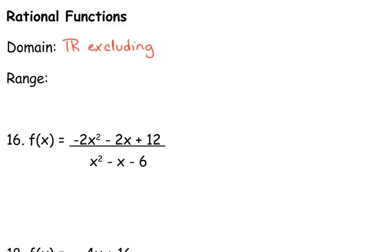Do y'all remember what the values were called that caused issues with our rational functions? When the denominator is equal to zero, what happened? It starts with an A — asymptotes. Which ones? Horizontal or vertical? Vertical asymptotes. When the denominator is equal to zero, we had vertical asymptotes. What was another thing we found, right before vertical asymptotes — it was just a single point that was a problem. It was called a hole. So our domain excludes vertical asymptotes and holes.